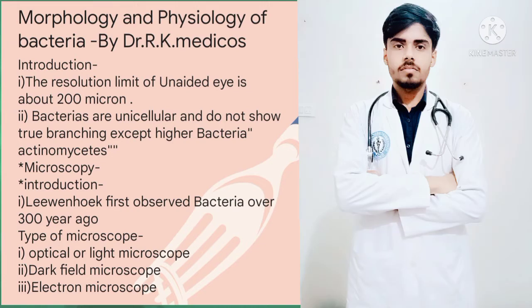Before discussing the morphology and physiology of bacteria, there are some important points that should be remembered. First, the resolution limit of the eye is about 200 microns. Bacteria are unicellular and do not show true branching, except the higher bacteria like actinomycetes.